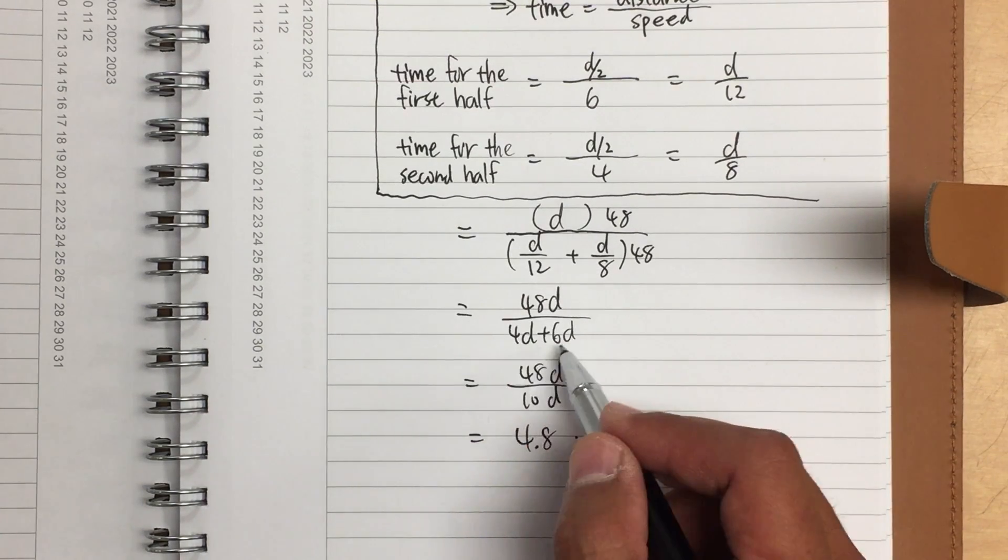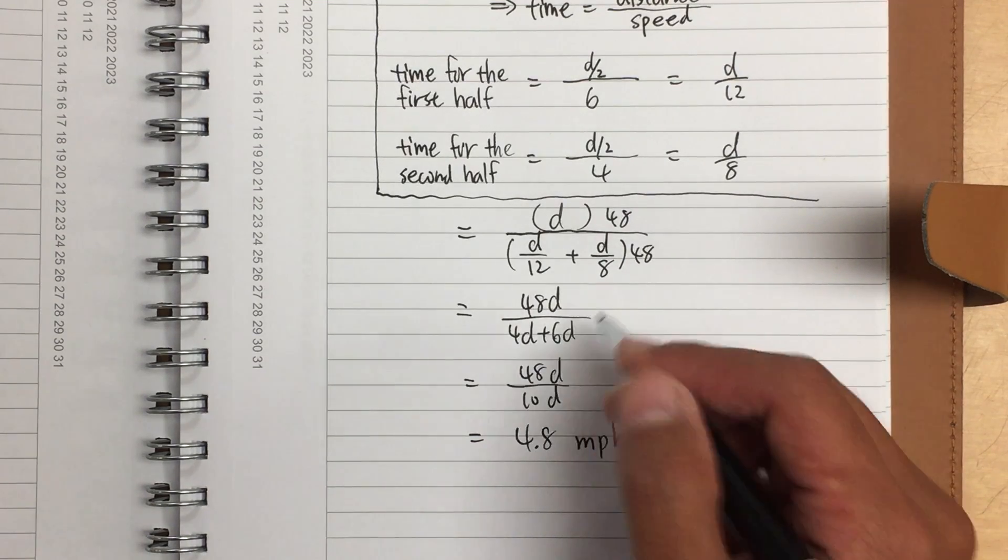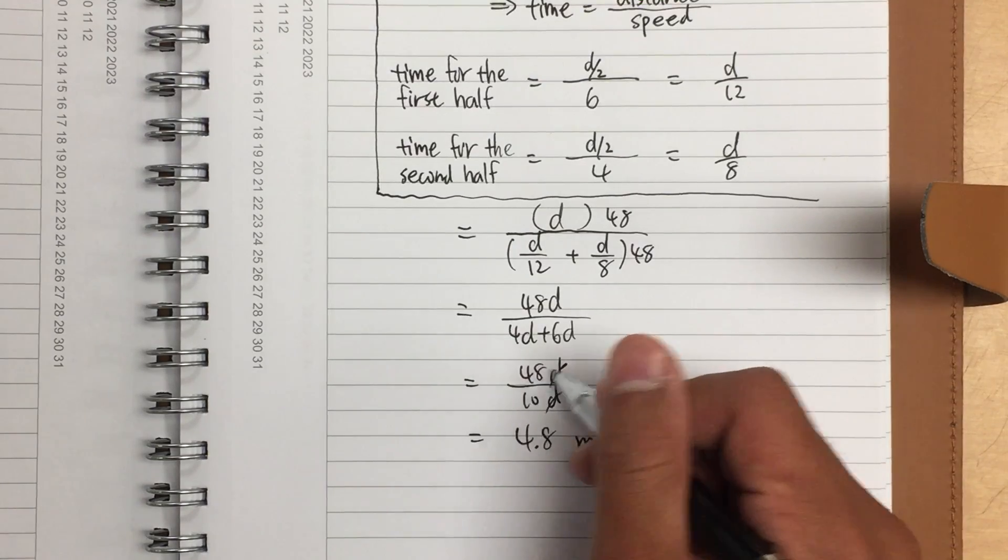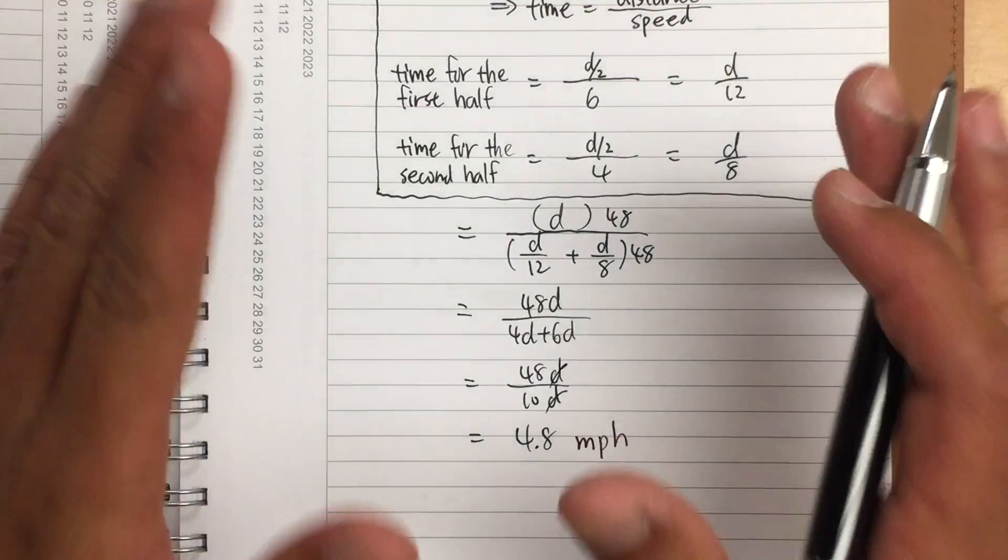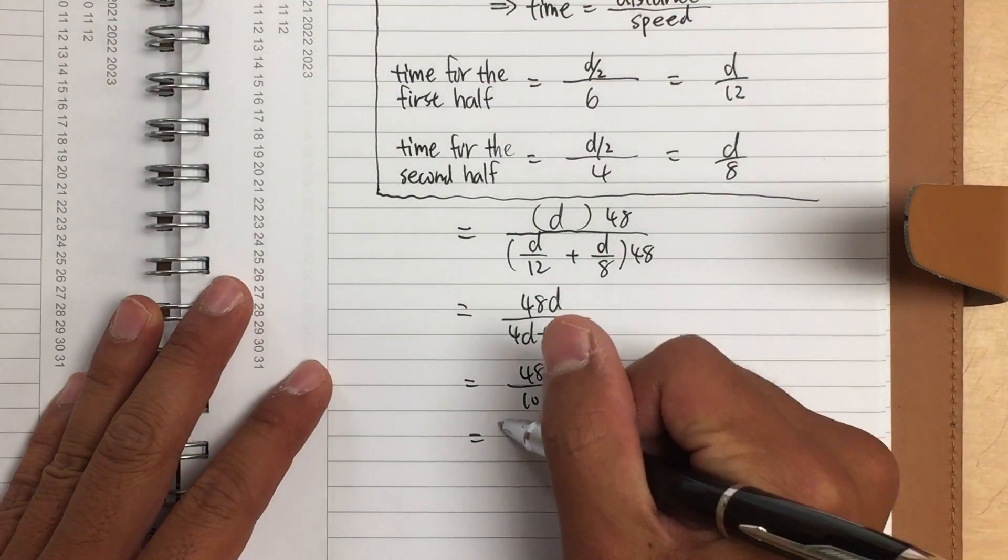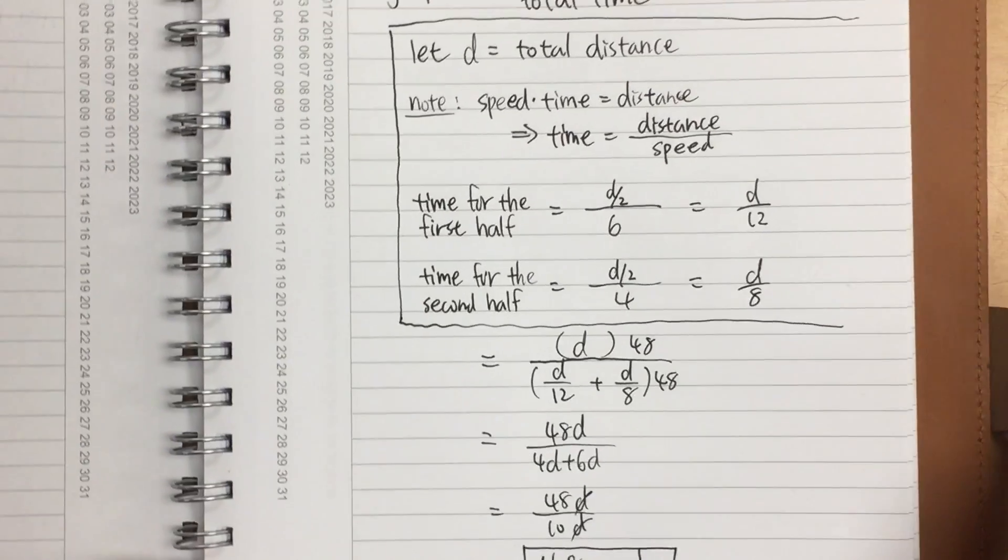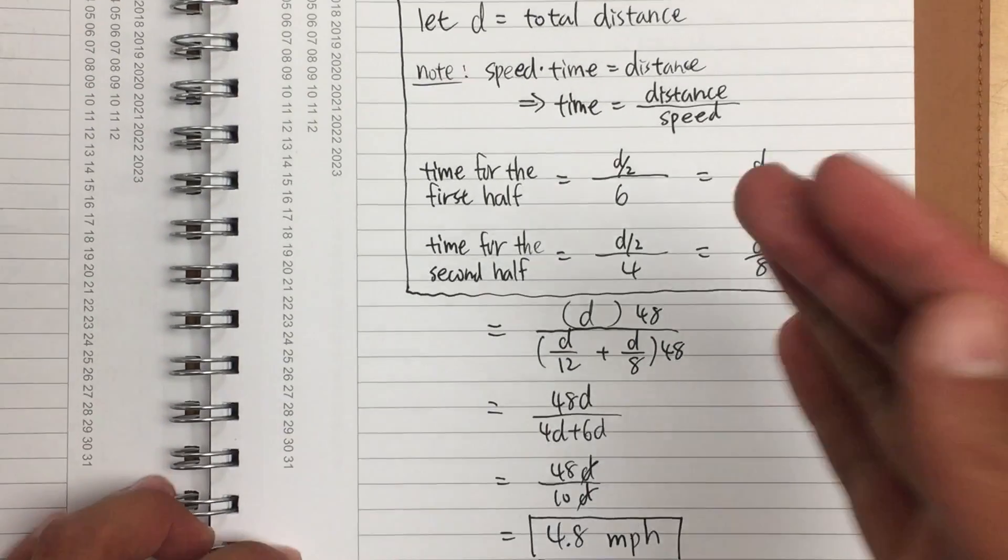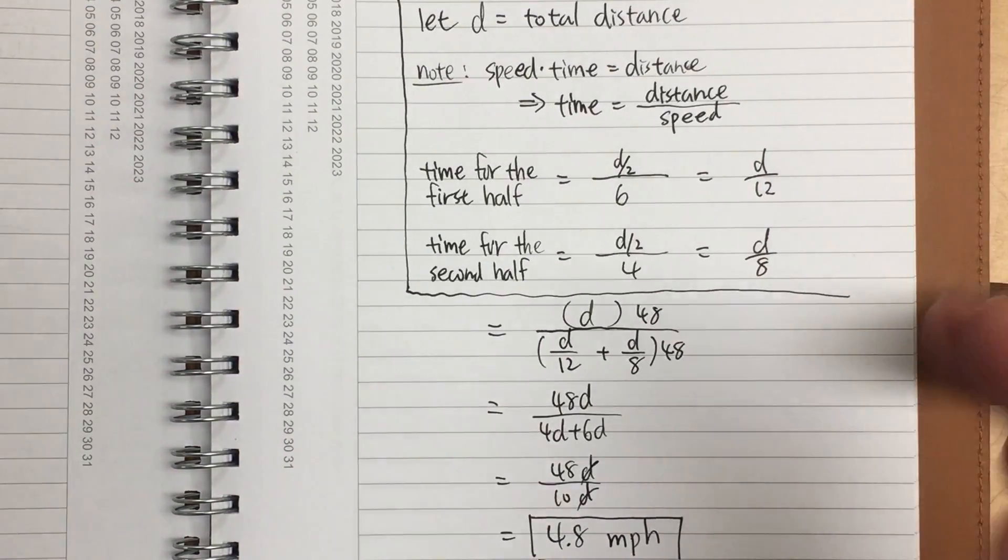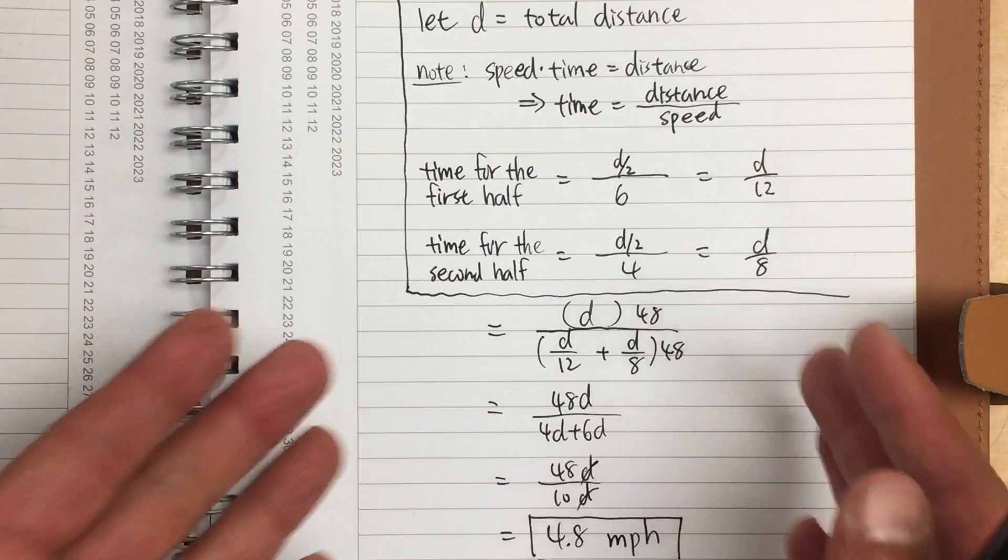On the bottom, 4d plus 6d is just 10d. And on the top, we still have the 48d. And of course, we can divide d and d out and then 48 divided by 10 is just 4.8. So you see, the answer is not 5 miles per hour. The answer to the second question is actually 4.8 miles per hour. So be really careful when we're talking about average speed versus average pace. This right here is called the harmonic mean. It's really cool. If you haven't seen it in the past, this is the time that you need to know about this.